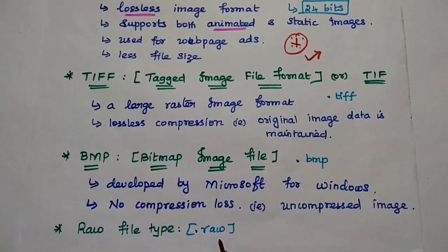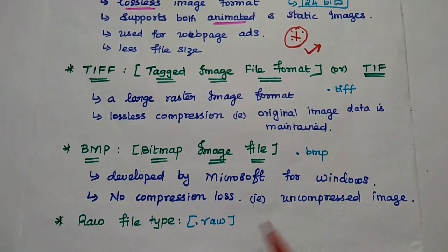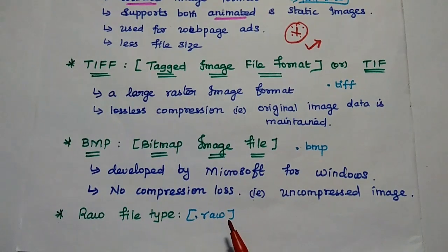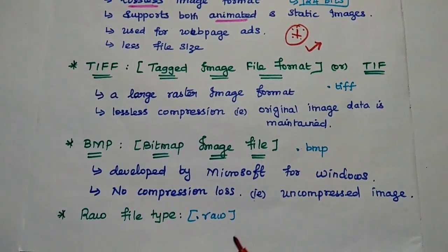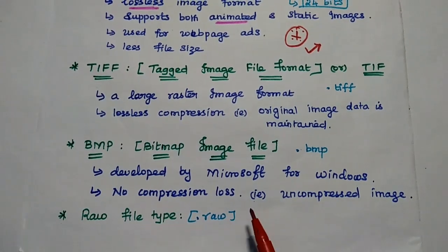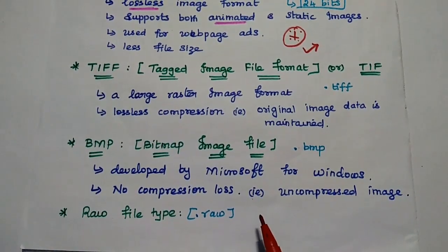Next one is BMP, that is Bitmap Image File. Simply we can represent .BMP. It was developed by Microsoft for Windows. For Windows files can be represented with this BMP with high quality. There is no compression loss.